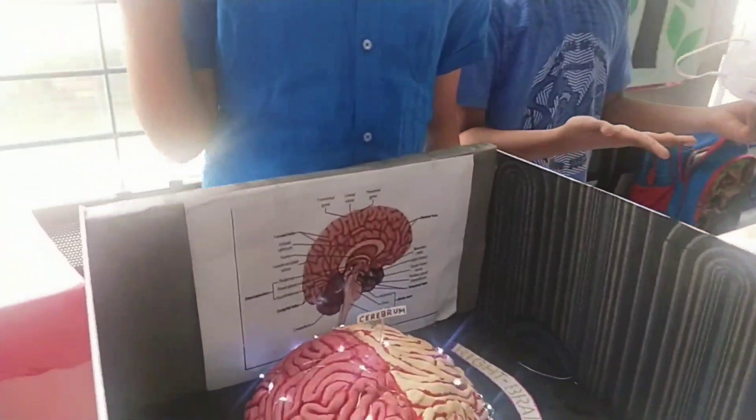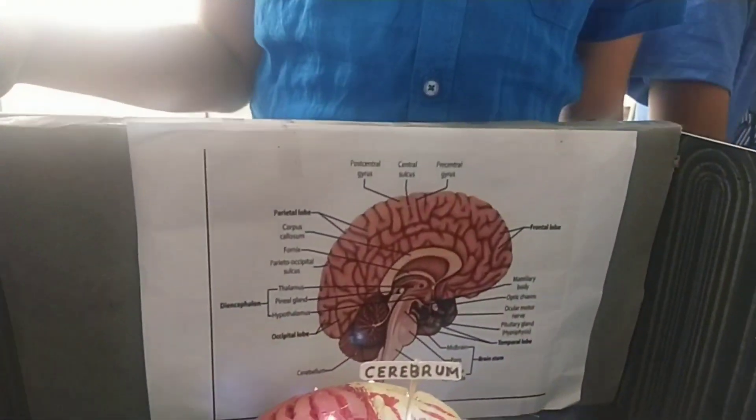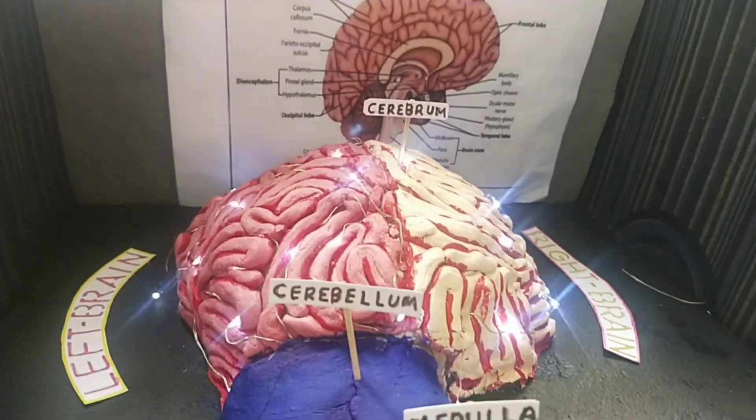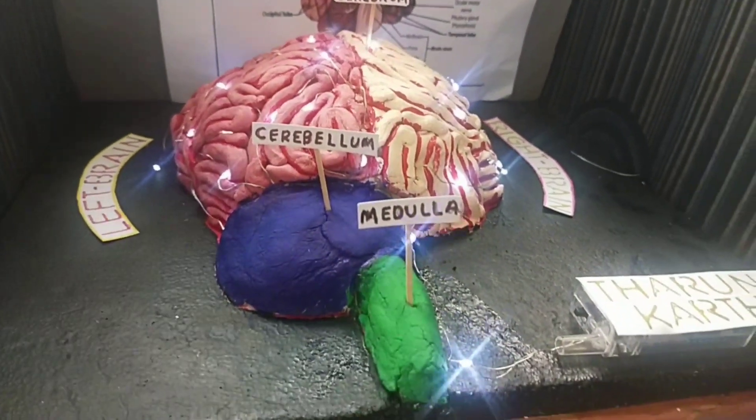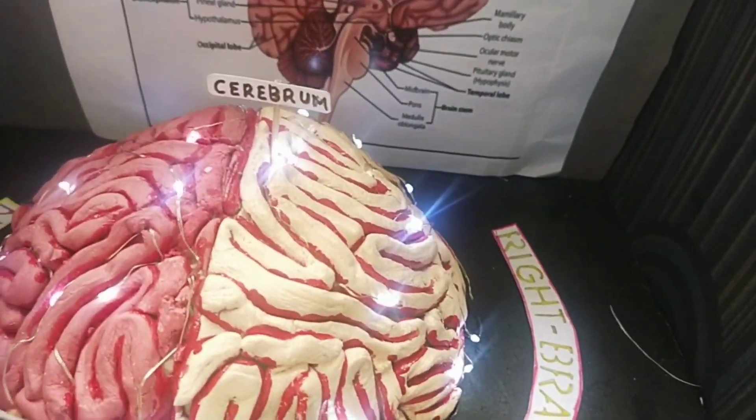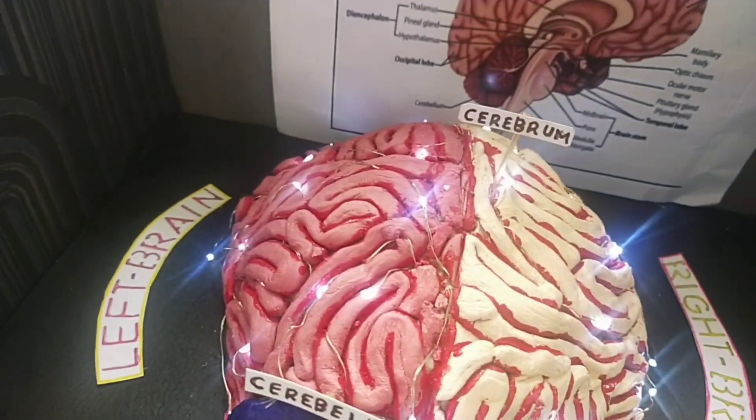Then comes a brain model where you can see all three regions of the brain: the cerebrum, cerebellum, and the medulla. As we all know that cerebrum is the largest part of the brain which composes of left and right hemispheres.